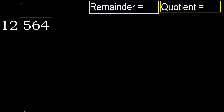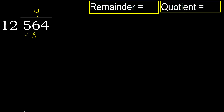564 divided by 12. 5 is less, therefore next, 56 is not less. With 56, 12 multiplied by which number is nearest to 56 but not greater? 12 multiplied by 5 is 60, which is greater. Multiplied by 4 gives 48, which is not greater. Subtract: 56 minus 48 is 8.